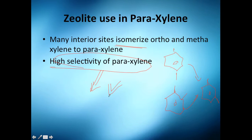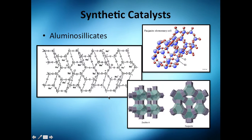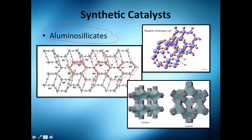Now let's move on to synthetic catalysts. The common ones are aluminosilicates — essentially human-made. You're going to have a lot of silicon, aluminum, and oxygen bonds. You can see them everywhere; they form these shapes right here, and also tube-like structures.